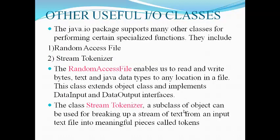Other useful input-output classes: the Java input-output package supports many other classes for performing certain specialized functions. These include RandomAccessFile and StreamTokenizer. The RandomAccessFile enables us to read and write bytes, text, and Java data types to any location in a file. This class extends the Object class and implements DataInput and DataOutput interfaces. The StreamTokenizer, a subclass of Object, can be used for breaking up a stream of text from an input text file into meaningful pieces called tokens.